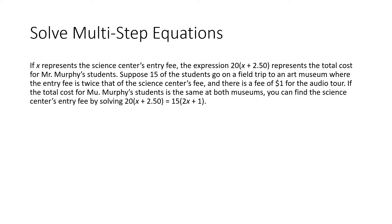If we use the colors we were using: the total cost for Mr. Murphy's students is the same at both museums, that's why we have an equal sign here. This here is the cost of the science center, and this one over here is the cost of the art museum. Let's take a look and see how we got to each of these — the science center expression is what we have on that side.